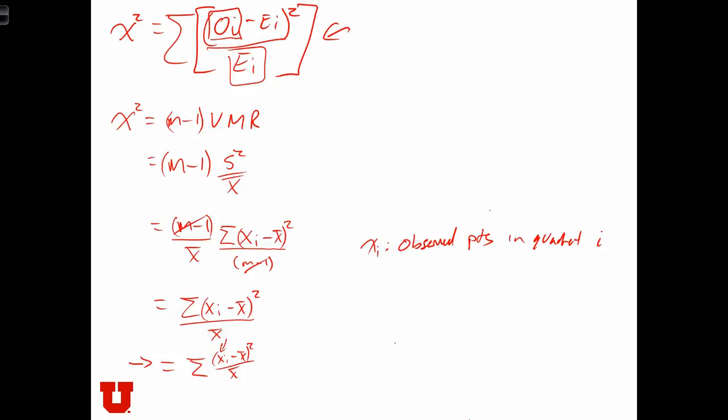If the data are random, we expect to see X-bar observations in each grid cell. This is the expected number of points in a quadrat.